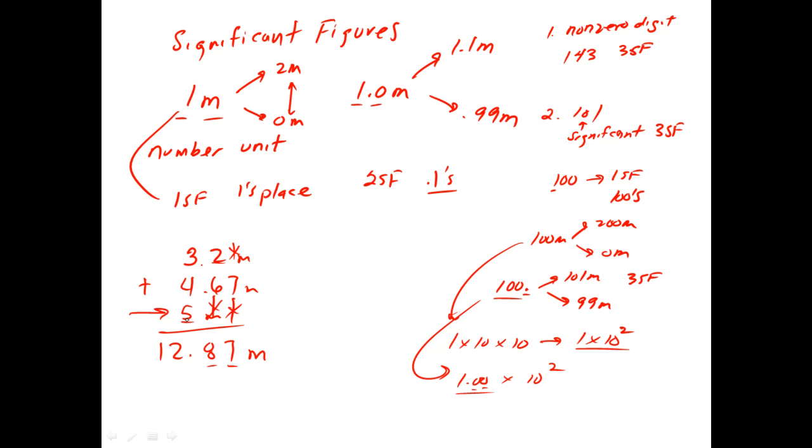So that's at the ones place, so we can only report our final answer to the ones place. So to report our final answer, we look at the ones place. We look only at the number adjacent to the ones place, the eight. If the number adjacent to where we're going to round off is five or greater, we round up. If it's less than five, we round down. So eight's greater than five, so my final answer would be thirteen meters.